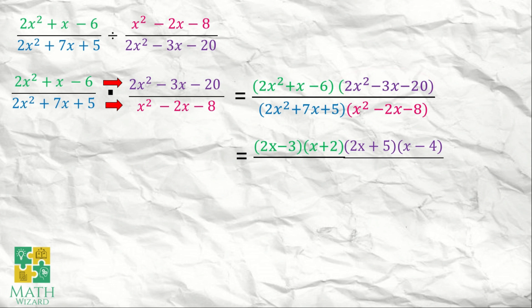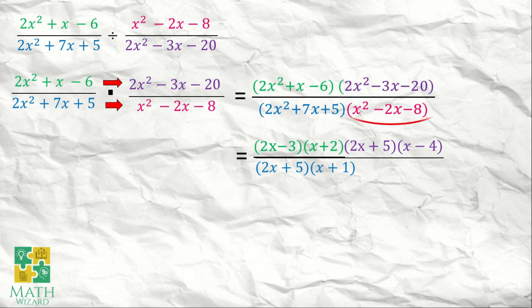So for the next polynomial, 2x squared plus 7x plus 5 becomes the quantity of 2x plus 5 times the quantity of x plus 1. And x squared minus 2x minus 8 factors as the quantity of x plus 2 times the quantity of x minus 4.